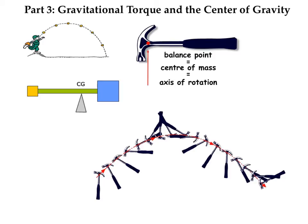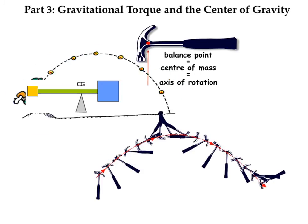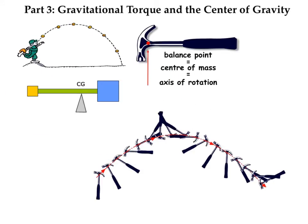The center of gravity is also the balance point of an object. A baseball follows a nice arc because its center of gravity is right in the middle. For a non-uniform object with a weighted end, the balance point — the center of gravity — is closer to the heavier end. Center of mass and center of gravity are essentially the same thing. Only for very large objects, like the Sears Tower in Chicago, does the center of mass differ from the center of gravity by a millimeter or two.